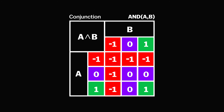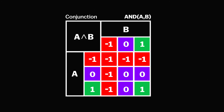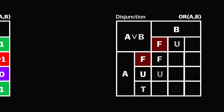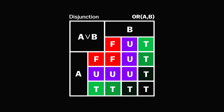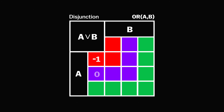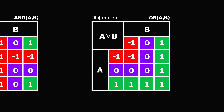Now that you see how truth values can be mapped to balanced ternary notation, understanding disjunction — also known as the OR operator — should be really easy. It follows the maximum function: the greater number dominates. So −1 OR +1 equals +1, since +1 is greater than −1.